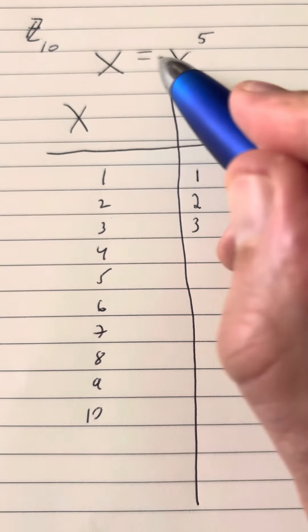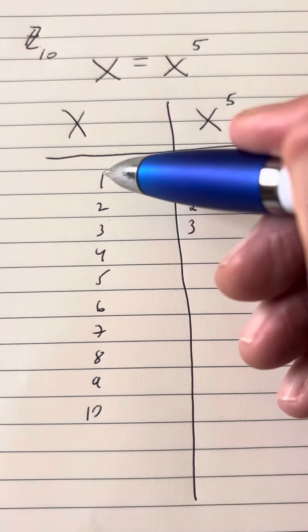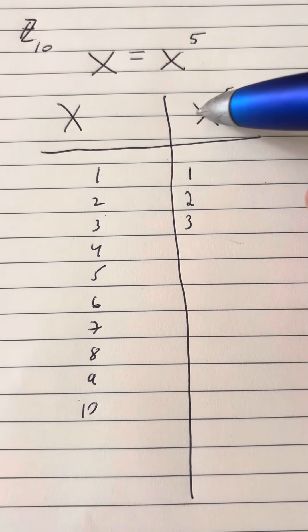So for example, if the number is 21, that's going to correspond to the number 1, because the remainder of 21 when you divide that by 10 is 1.